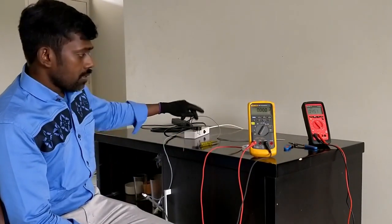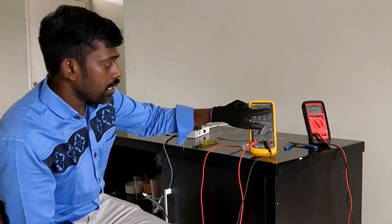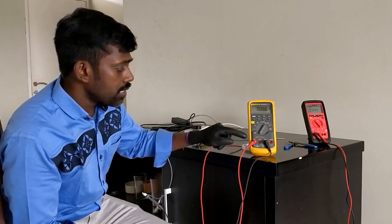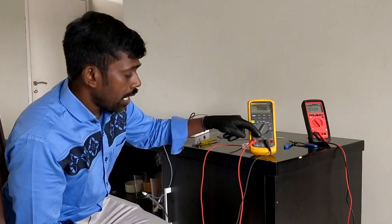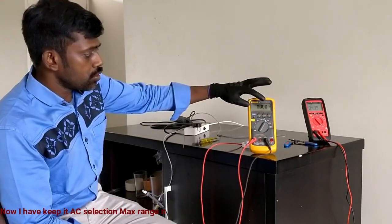Second, I connected and checked the range. I have kept it in AC and the range will be 2. I have kept it in maximum range. Now it shows 0 amps.